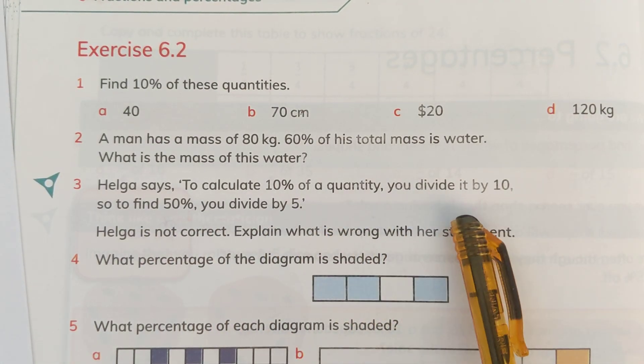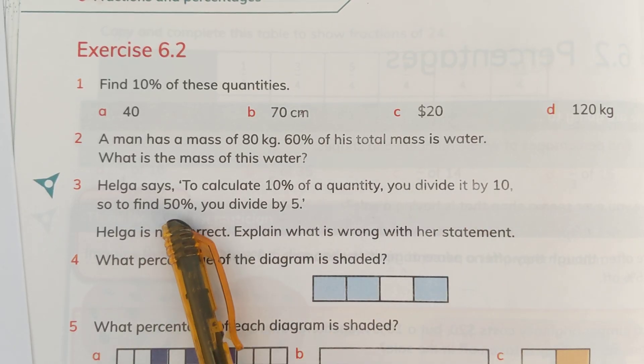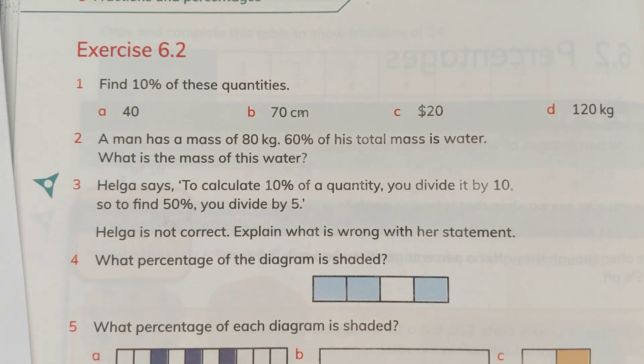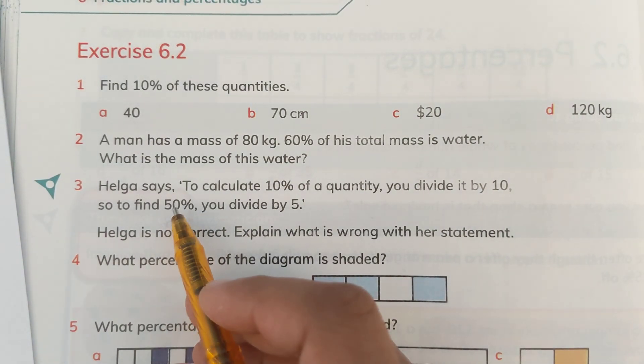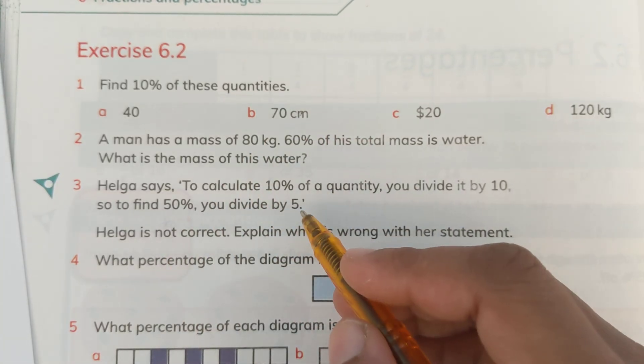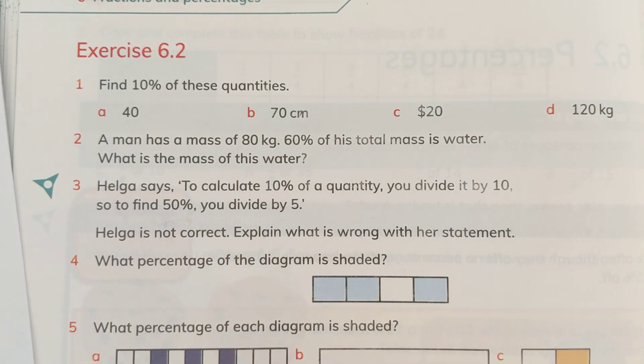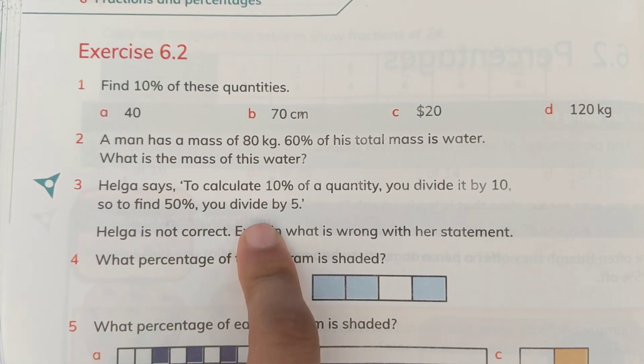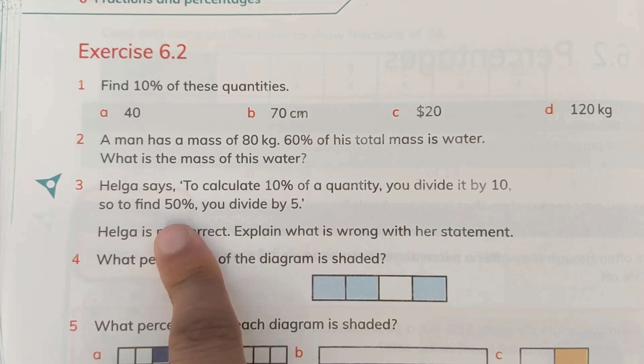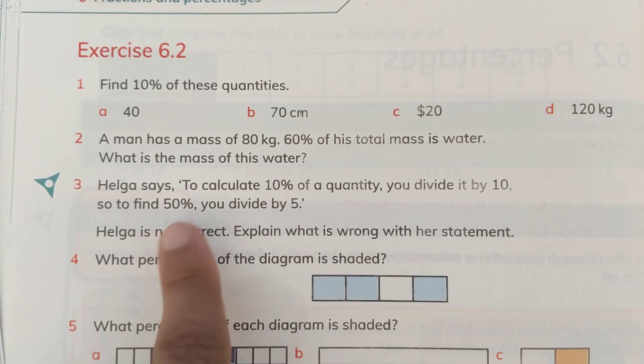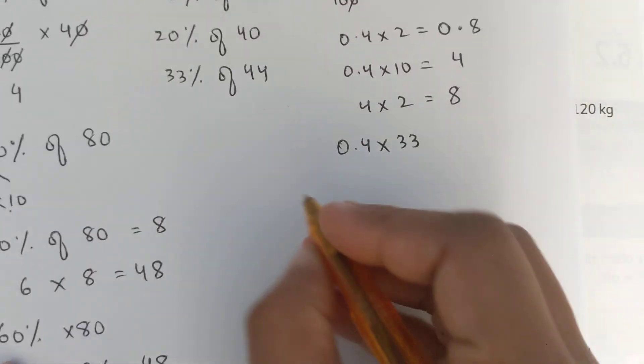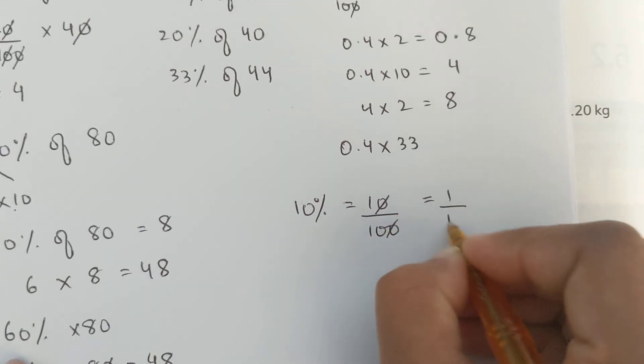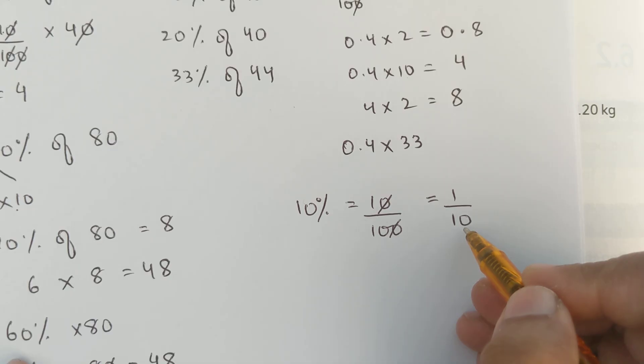Helga says to calculate 10% of a quantity, you divide it by 10 as we discussed. So, to find 50% you divide by 5. No, we are not supposed to divide it by 5. If we have to find out the 50% of something, 50% is basically half of something. So, we have to divide it by 2. Helga is not correct. Explain what is wrong with her statement. If we need to find out 50% of something, we have to divide it by 2, not by 5. Because 50% of something is half, 1 over 2. 50% means 50 over 100.